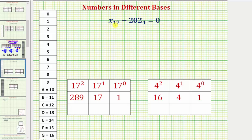We want to solve the given equation. We have x base 17 minus 2, 0, 2 base 4 equals 0. Let's begin by isolating the variable by adding 2, 0, 2 base 4 to both sides.